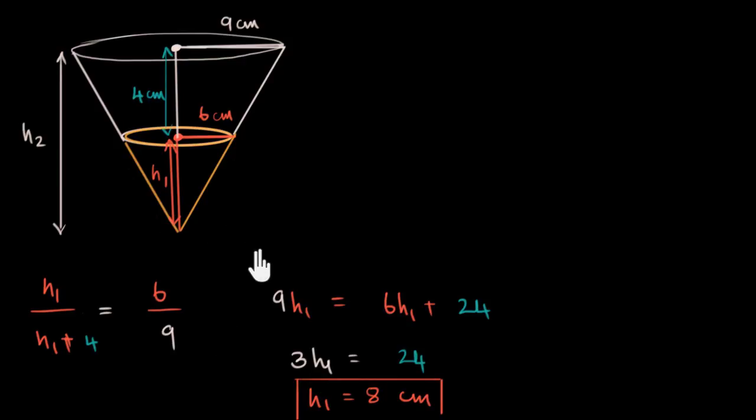Notice that this is the key idea: being able to visualize this cone over here, using similarity to find this h1, with which you can find h2. h2 equals—this is 8, this is 4—so this is 8 plus 4 or 12 centimeters. And you have done all of the hard work you need to solve this problem.